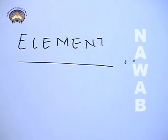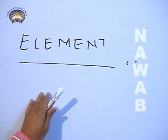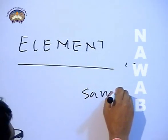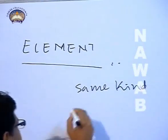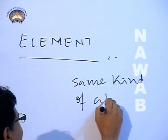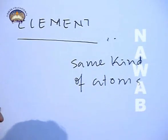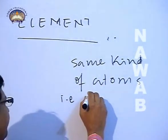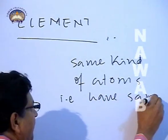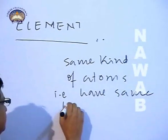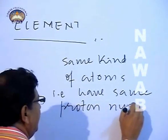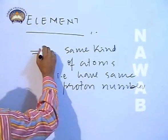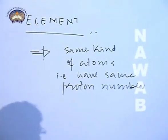As I have already told you, element is a kind of matter which consists of same kind of atoms. What do we mean by same kind of atoms? It means if they have the same proton number, they would be termed as same kind — that means one kind of atoms.